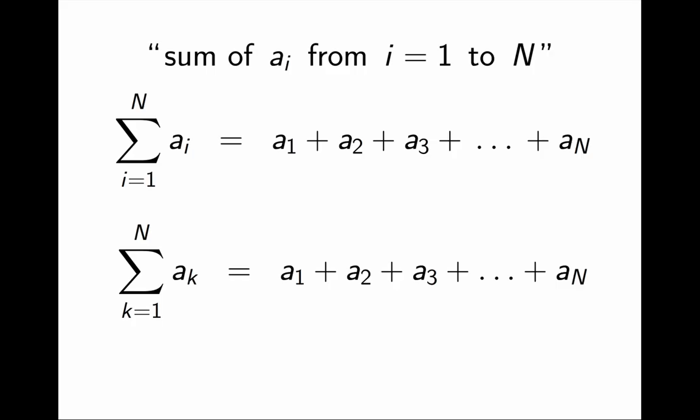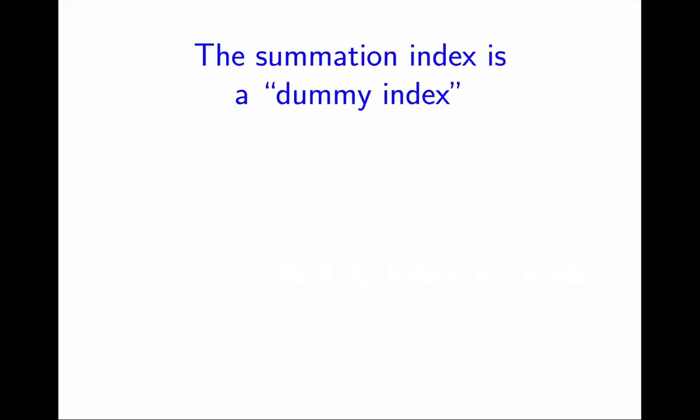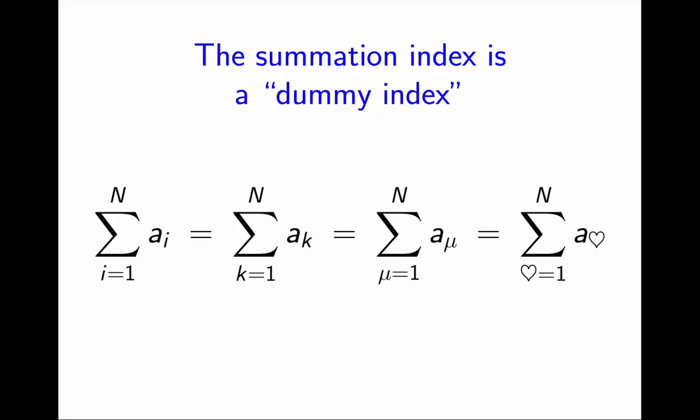And this brings us to an important point. The summation index is a dummy index. This means that it does not carry any intrinsic meaning. i doesn't mean anything special. We could use k instead of i, or any other letter, or any other symbol, as long as we are not currently using that other symbol for something else, of course.